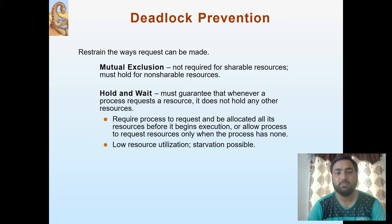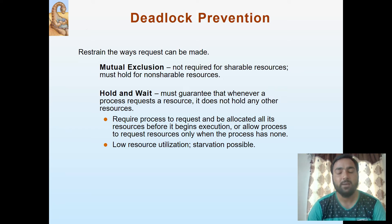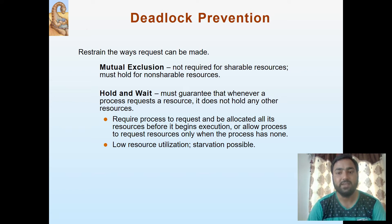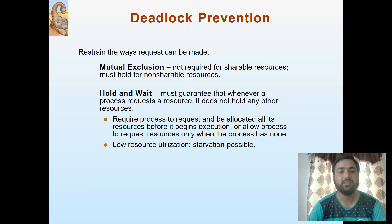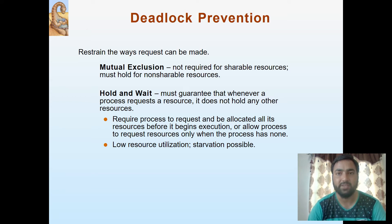It is required for a process to request and be allocated all its resources before it begins execution. Alternatively, a process will request resources only when it has none. The problem with this approach is low resource utilization — the utilization of resources will be less. The second problem is starvation: some processes will be waiting for a particular resource for execution indefinitely.